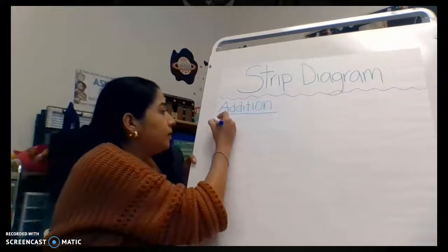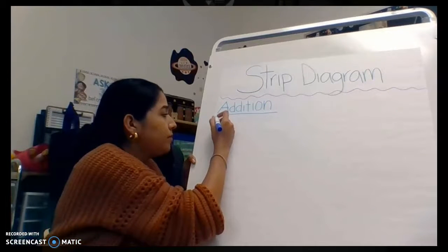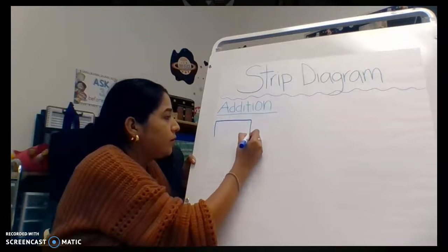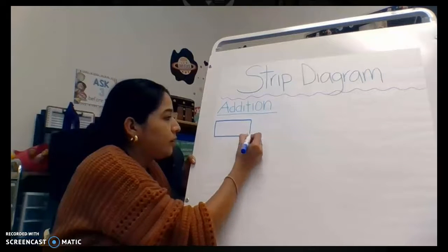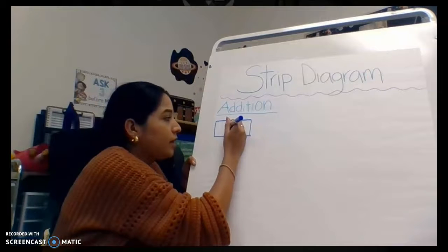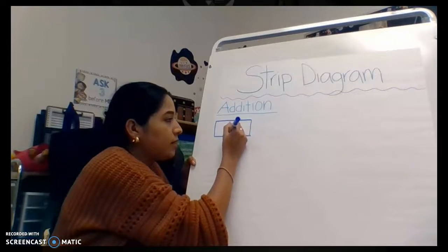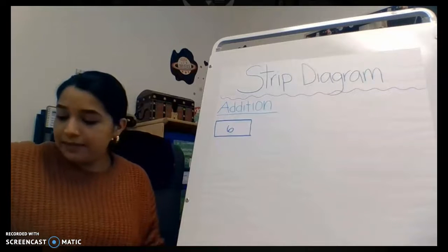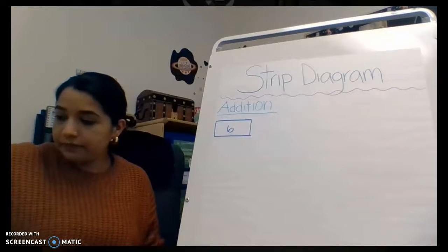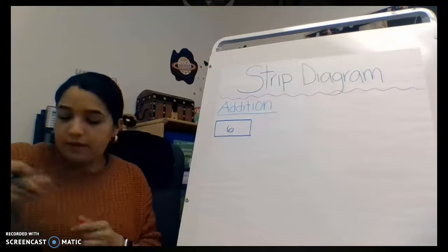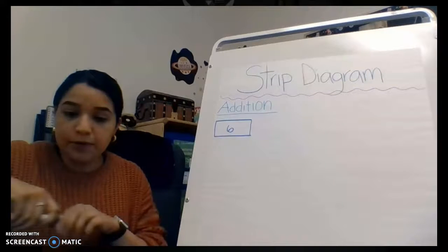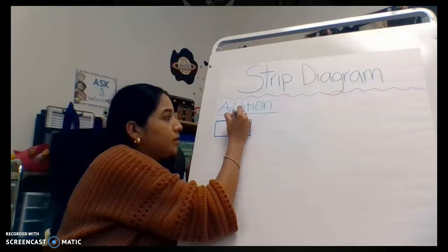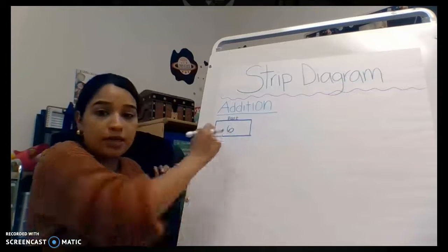We had six blue birds, so I'm going to draw a blue square and write six right here. I have six, and I'm going to label it as our part — our six blue birds is one part.